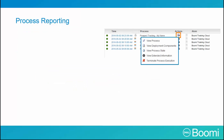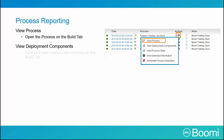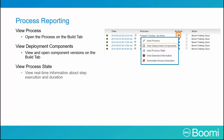The execution actions are exposed in the gear button dropdown per each execution thread and are important for advanced control and debugging. You can view the process, which will open the process on the build tab, and view the deployment components, which will view and open the component versions on the build tab.